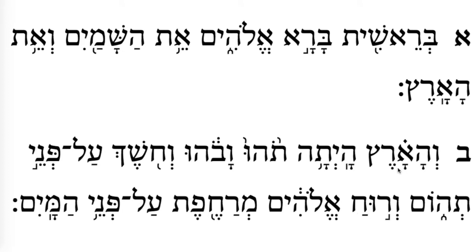Now let's do the trope marks. This is revi'i. This is mercha. And this is pashta. Pashta always has to be at the end of the word; if the accent needs to go in a different syllable, there will be two — a pashta at the end and another one wherever the accent mark goes. So this is 'tohu' — we drop the last sound because the emphasis goes on the accented syllable. So we say 'tohu.'